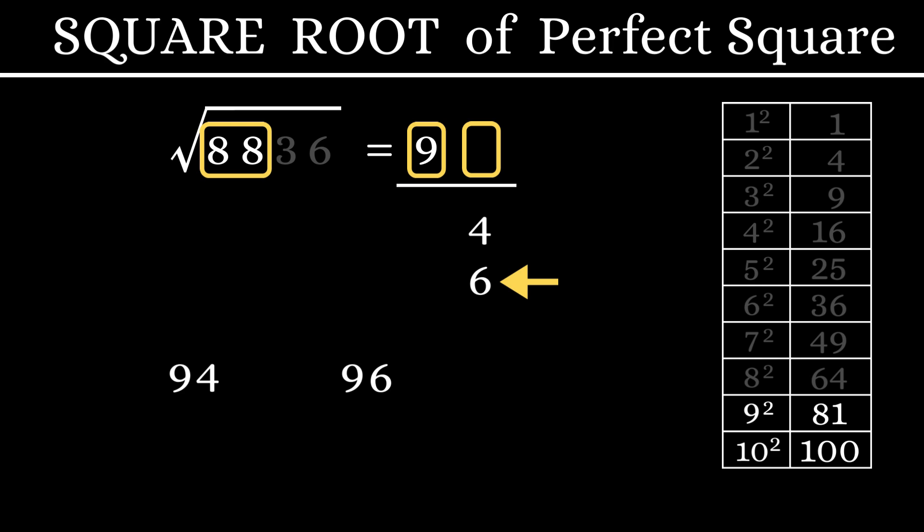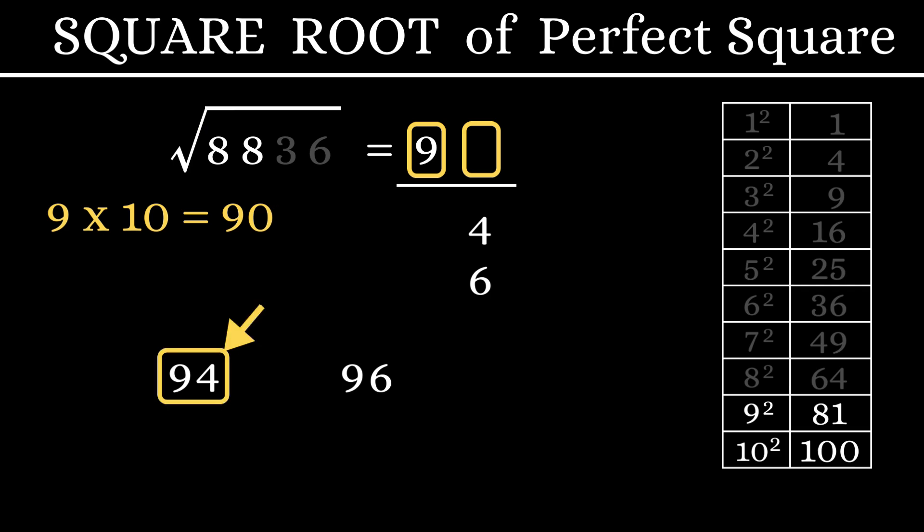To find that out, let's take this 9 and multiply it with the next number 10. 9 into 10 is 90. Since 88 is smaller than 90, we can say that the smaller number 94 is our answer. Square root of 8,836 is 94.